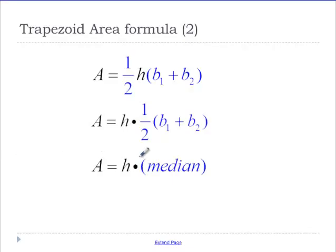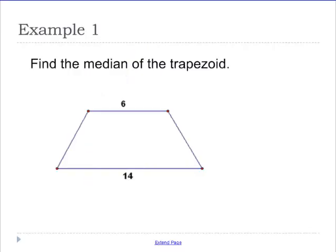Now that we know a couple different formulas, this one on top and the one on the bottom, let's go ahead and start working. So, let's find the median of this trapezoid. We already did this. Drawing the midpoints, 6 plus 14 over 2, gives me that that median is 10.